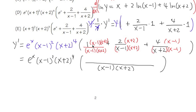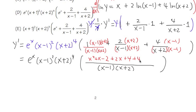Now distribute everything in the numerator. For the first part: x minus 1 times x plus 2 gives x squared plus x minus 2. For the second part: distribute 2 into x plus 2, giving plus 2x plus 4. For the third part: distribute 4 into x minus 1, giving plus 4x minus 4.